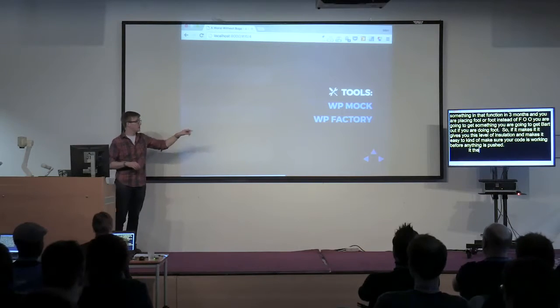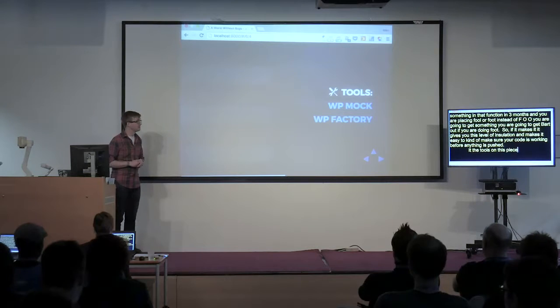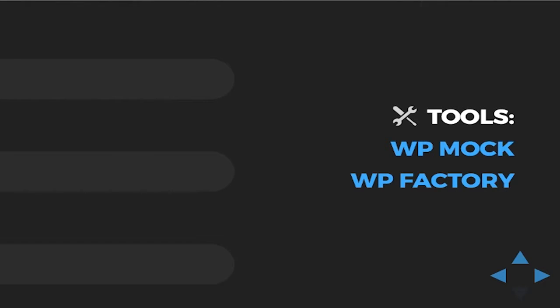The tools on this piece: you have WPMock, which is what I was using in these functions to actually replace the WordPress core functionality. And then if you want to write anything for core itself, there's a set of tests called WP Factory bundled in core development. It's really worthwhile to check those out and see how they're testing those functions and use them as a good example.